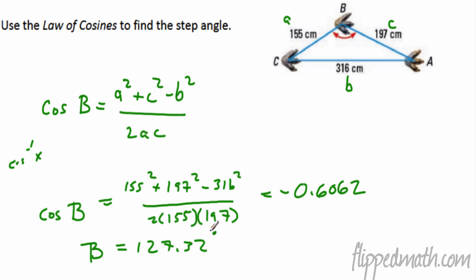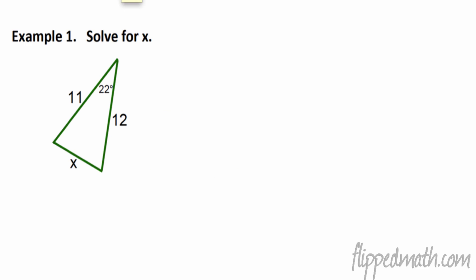127.32. And that is in degrees and it's the measure of angle b. And we're all done. That is the law of cosines. You just plug it in and figure it out. Alright, so first example. Solve for x.